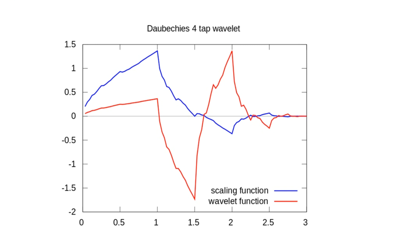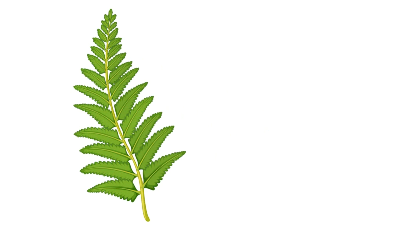In red, you see the Daubechies wavelet function for the four-tap wavelet system. Looking at the shape of the scaling function and the wavelet function, you will notice it is quite similar to that of a fern plant. The pattern of this shape is very similar to the Daubechies wavelet, which has given a major contribution to wavelet theory.